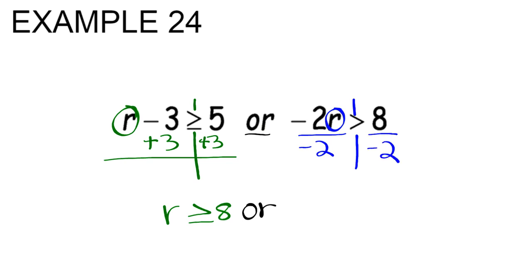Whenever you're dividing by a negative, you need to remind yourself to flip the inequality symbol. That's going to give us r. Now we have less than. A positive divided by a negative is a negative. 8 divided by 2 is 4.